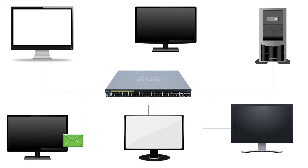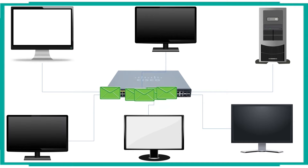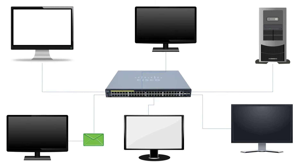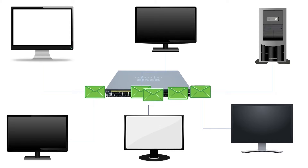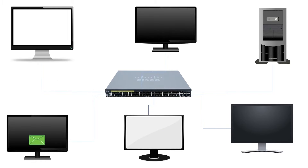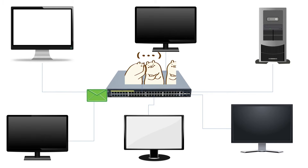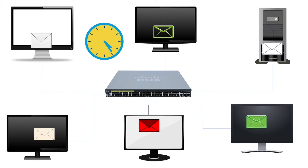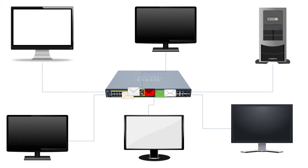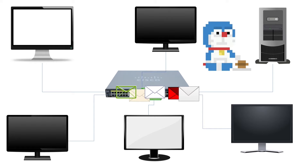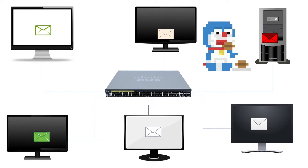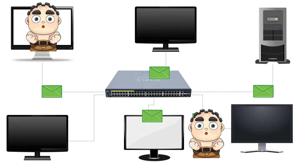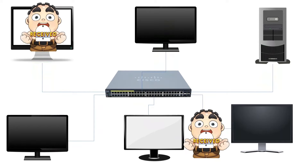A broadcast is a layer 3 message that represents all devices in the local segment. When a device sends a broadcast message, the message reaches all devices connected in the local segment. Many functions depend on broadcast messages, and devices generate a lot of broadcast messages every minute. Broadcast messages consume a big chunk of network bandwidth, and all devices on the local segment receive a broadcast message whether the message is for them or not.